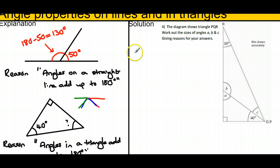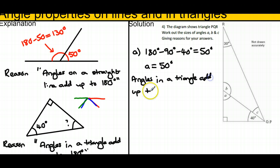We're working out angles a, b, and c. Angle a is in the triangle at the bottom along with 90 and 40. If we take 180 degrees, take away the 90 degree angle, take away the 40 degree angle, we're left with 50 degrees. So a is 50, and the reason is 'angles in a triangle add up to 180.'